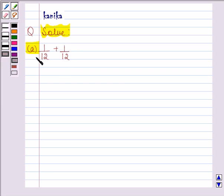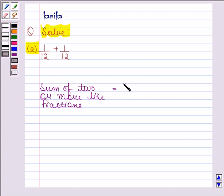In this question we have to add 2 like fractions. We should know that sum of 2 or more like fractions is equal to sum of numerators upon common denominator.